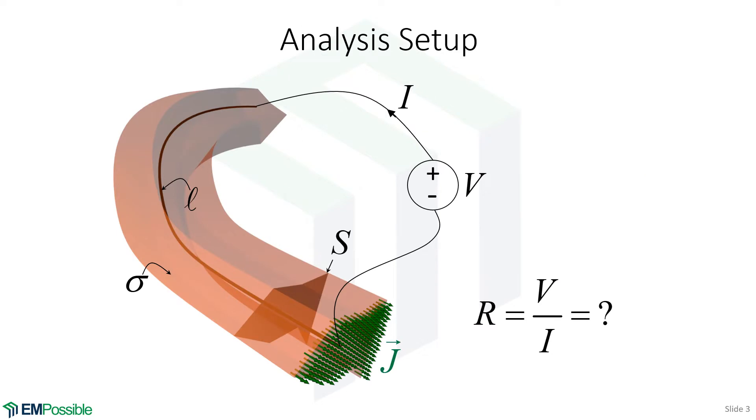So here's our analysis setup. We have some strangely shaped thing, and we look at its cross-section. Its cross-section has an area S. Let this structure here have conductivity sigma.